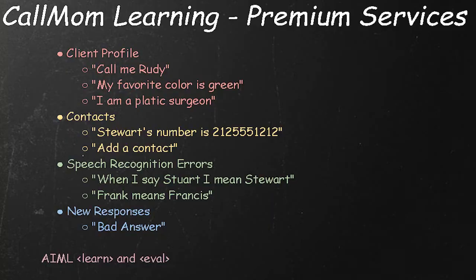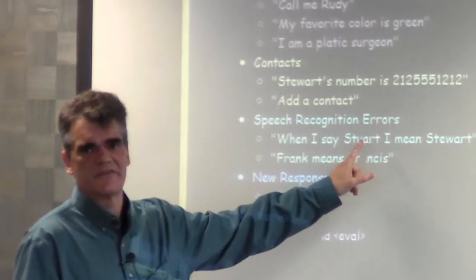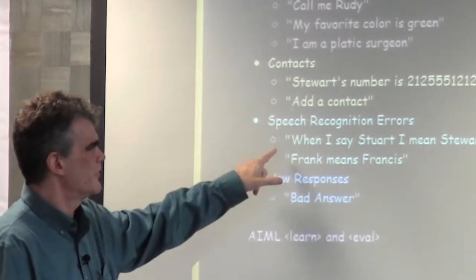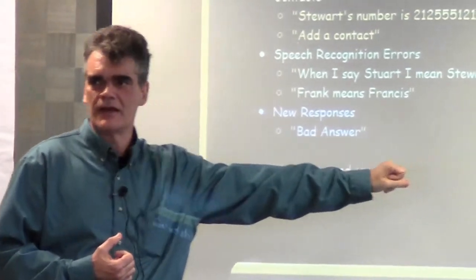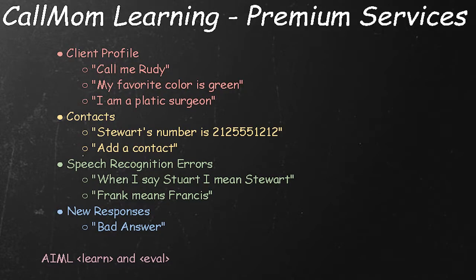A key feature is handling speech recognition errors. Because we're on Android, we're using the Google Voice API. Speech recognition errors are repeatable for the same speaker — for example, if I say 'Stuart,' it always recognizes it as 'Stuart' with U-A. But I can actually tell the bot that when I say 'Stuart,' I mean 'Stuart' with a W, and then every time I say the word, it will recognize the corrected version. Another use of this is for nicknames or abbreviations — I could say 'Frank means Francis,' and 'Call Frank' will look up Francis's number.